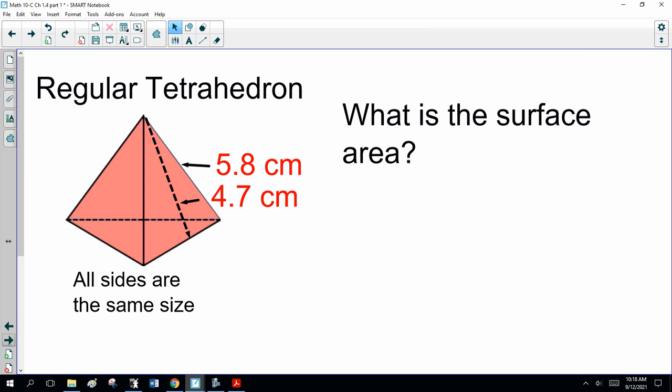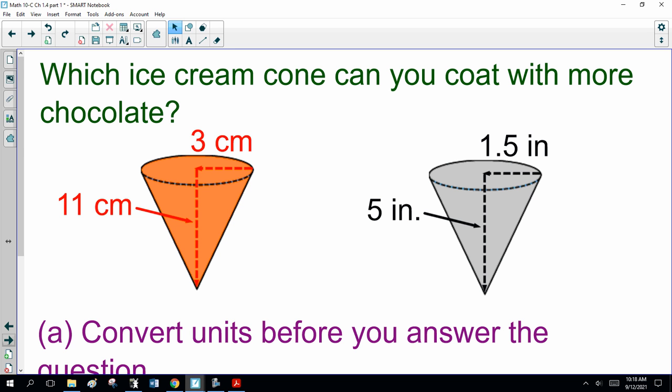Now, I'm going to skip the tetrahedron. This leads to my favorite trick question. Which ice cream cone can you coat with more chocolate? Notice one has a height of 11 and a radius of 3 centimeters. The other has a height of 5 inches and a radius of 1.5 inches.